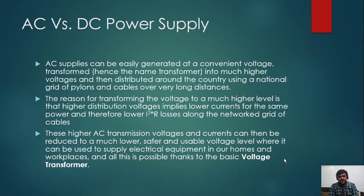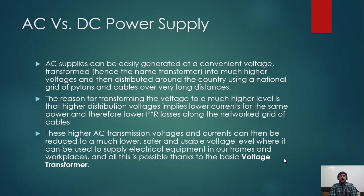Welcome. Let's continue - in the previous video I asked you to think about or note down the differences between AC and DC, and why AC is preferred. We still prefer AC in transmission, distribution, and generation. The reason - let's start exploring. AC supplies can easily be generated at convenient voltages. Generation in an alternator is always AC, so AC supply is naturally generated in generators.